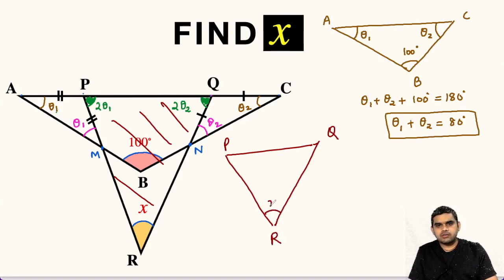The R vertex is unknown, that is x, which we have to find. This is 2 times theta 1 and this is 2 times theta 2. We will apply angle sum property in triangle PQR.